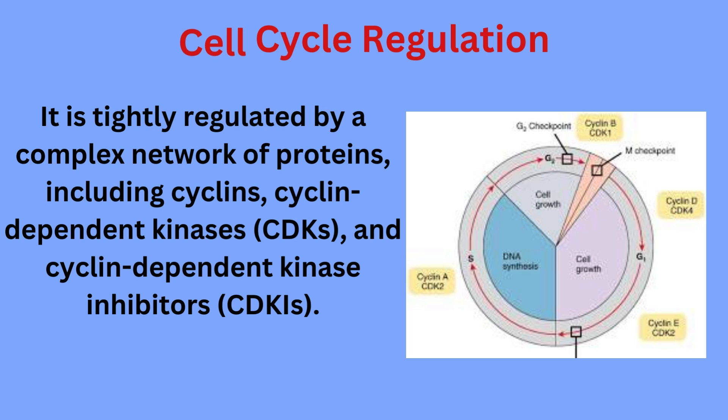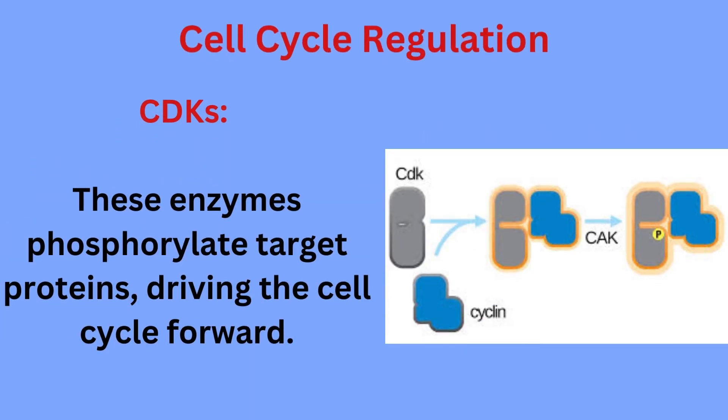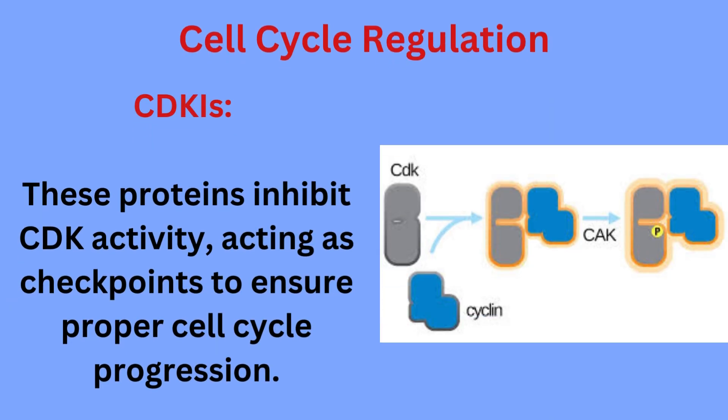Cyclins are regulatory subunits of CDKs, and their levels fluctuate throughout the cell cycle. CDKs are enzymes that phosphorylate target proteins, driving the cell cycle forward. Cyclin-dependent kinase inhibitors inhibit CDK activity, acting as checkpoints to ensure proper cell cycle progression.